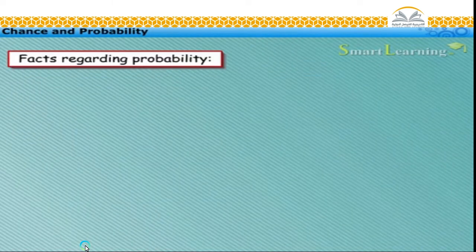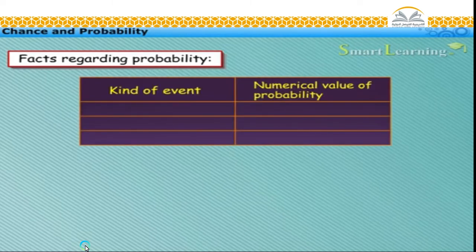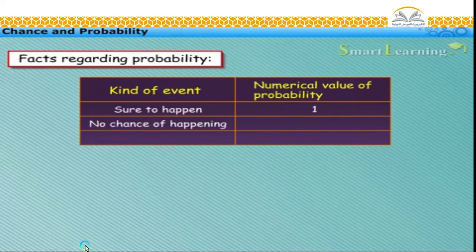Let us now learn some facts regarding probability. The events which are sure to happen have probability equal to one. Those events which have no chance of happening have probability equal to zero.